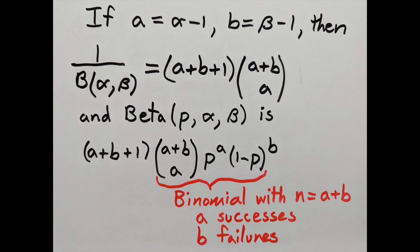But if you carefully work it out, 1 over beta of alpha beta equals a plus b plus 1 times a plus b choose a. So you put that together with the p's and you get the beta distribution, and it looks like a binomial distribution.